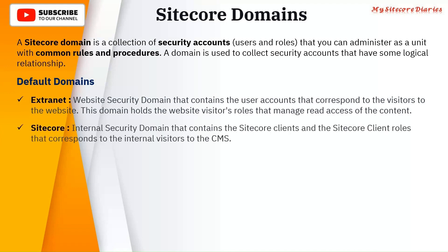The next domain is the Sitecore domain — an internal security domain that contains the Sitecore client users and Sitecore client roles that correspond to internal visitors to the CMS. So Sitecore has two kinds of users: website users and internal or CMS users. For visitor users you have the Extranet domain, and for internal users who log in to the Sitecore CMS you have the Sitecore domain. Users who need access to the Sitecore client and their corresponding roles go into the Sitecore domain.